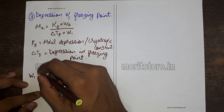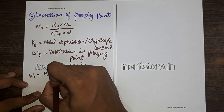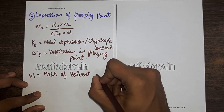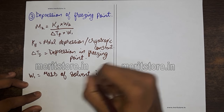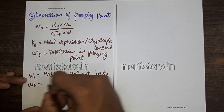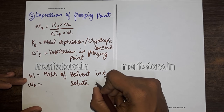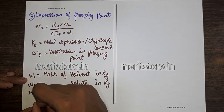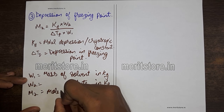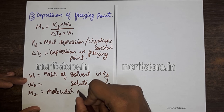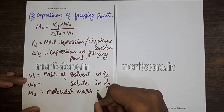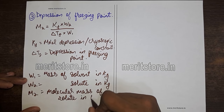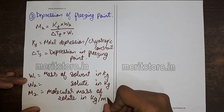w1 is equal to mass of solvent in kg, w2 is the mass of solute in kg, and m2 is the molecular mass of the solute in kg per mole.